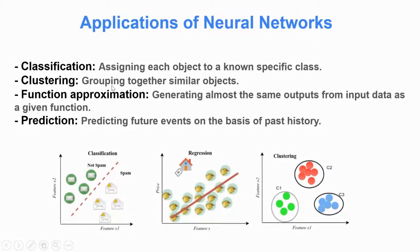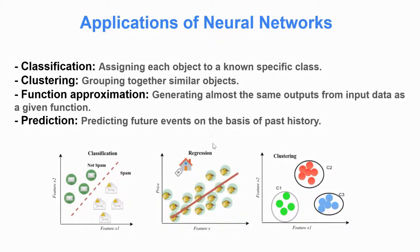Other applications include clustering, where we have sets of data and we group them based on similarity. We don't know in advance the number or types of groups we might get. Another application is prediction, used to predict future events or numbers. For example, predicting the price of a house in a specific region is a regression problem — based on different variables like location and market status, we predict what the price could be.